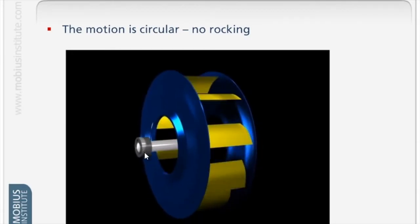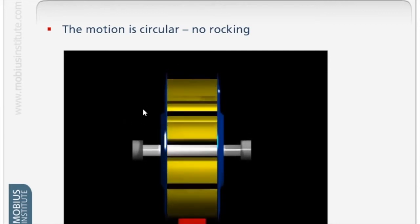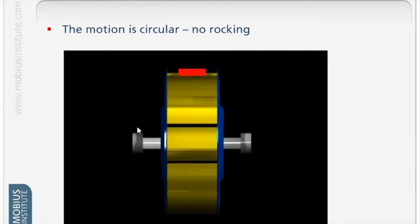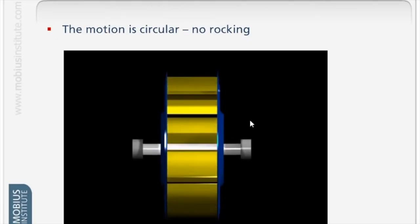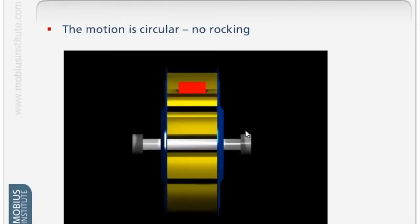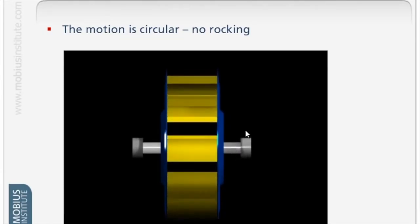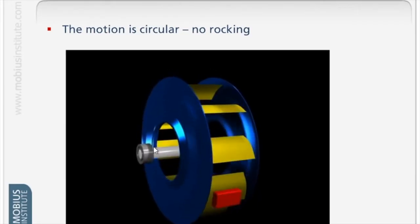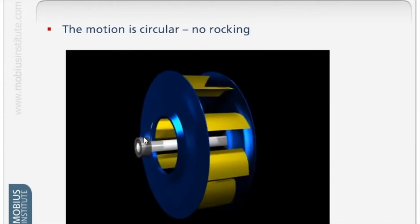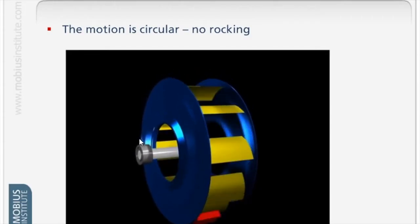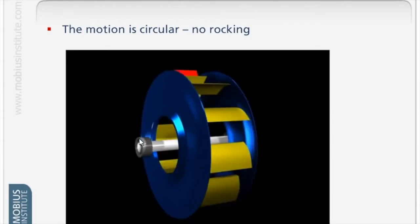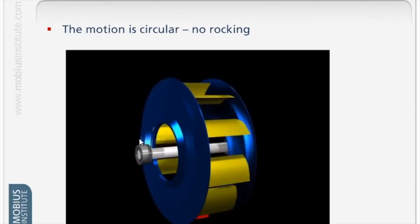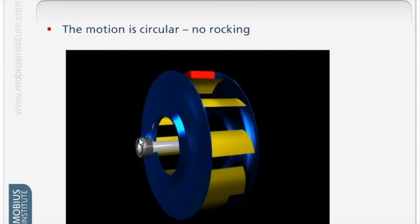From here, if we could take a phase reading, we measure vibration here and we measure vibration here and see whether it's going up together, down together, up together, down together. If we compared the vibration vertically here to horizontal, we would see that they're both going up and down but there's a quarter of a rotation delay between the two.